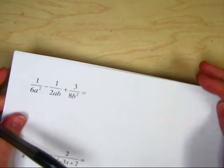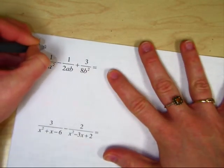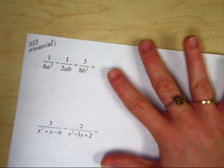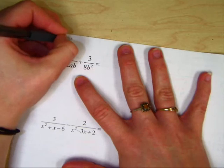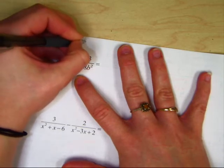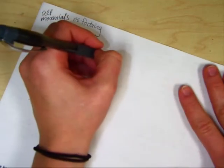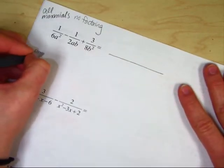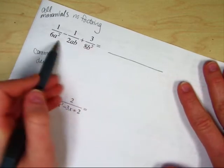Moving on. Notice in this problem it's different because all of these are all monomials. Because they're all monomials, you don't have to factor. That's good news, right? So your common denominator, okay? Common denominator. What's the biggest number?